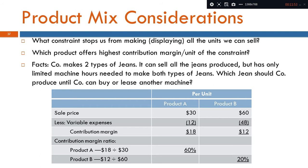If there is a constraint, you identify the constraint and determine the demand for each product within that constraint. The product with the highest contribution margin per unit of constraint is the one to prioritize. Within this constraint, whichever product has the highest contribution margin per unit should be produced first. Let us see an example: assume that the company makes two types of jeans. It can sell all jeans produced but has only limited machine hours needed to make both types.